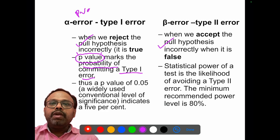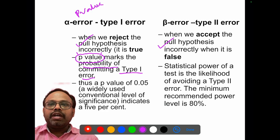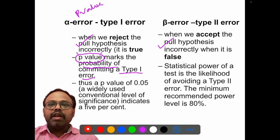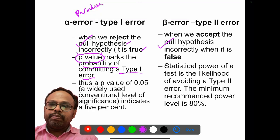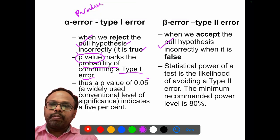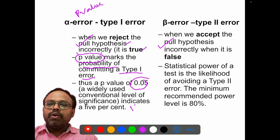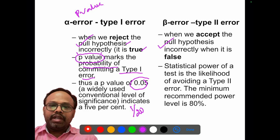P-value is the probability of rejecting the null hypothesis when it is actually true. Conventionally, p-value is kept at the 0.05 level — meaning they allow error up to 1 in 20 times.